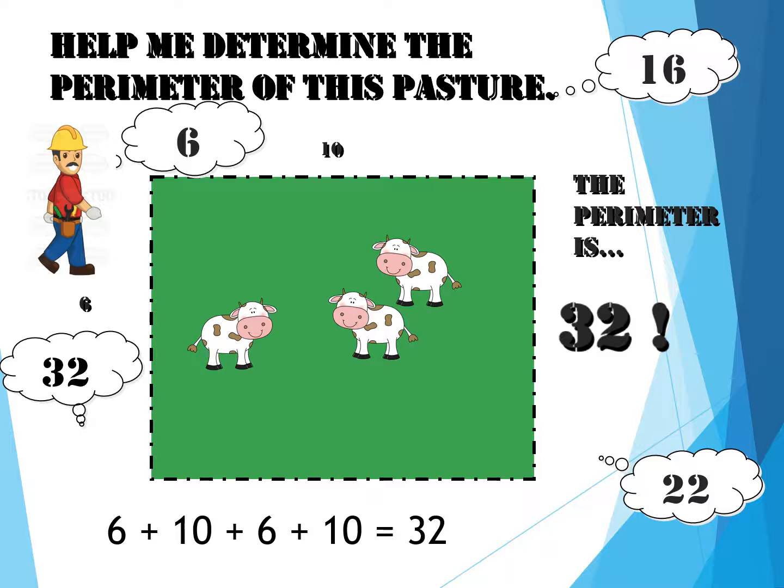Another way to take a shortcut might be to add six plus ten, which is 16, and then add 16 plus 16. It's just another way to determine that 32 is the perimeter.